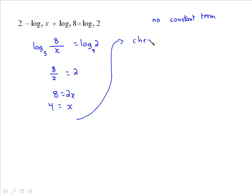Check. I can tell by a quick look that this one's going to work because this becomes negative log 4 base 5 plus log 8 base 5 is equal to log 2 base 5. And that one is okay. So we're all right. So therefore x is equal to 4.